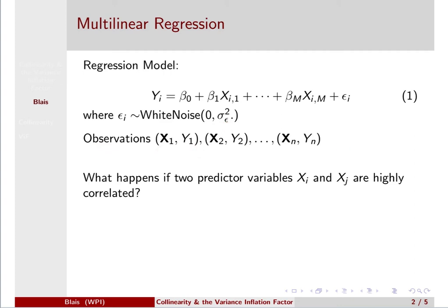And we have n observations. So the way we're writing this is this X1 is a vector of observations of the predictor variable, and Y1 is the response variable in the first case. So X is a vector of p predictor variables.